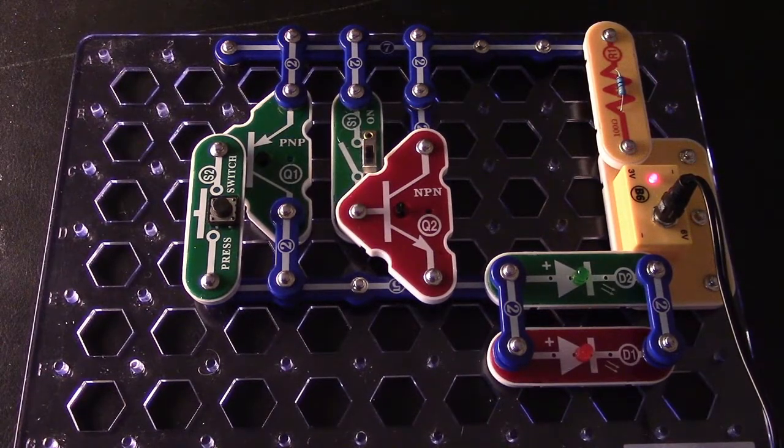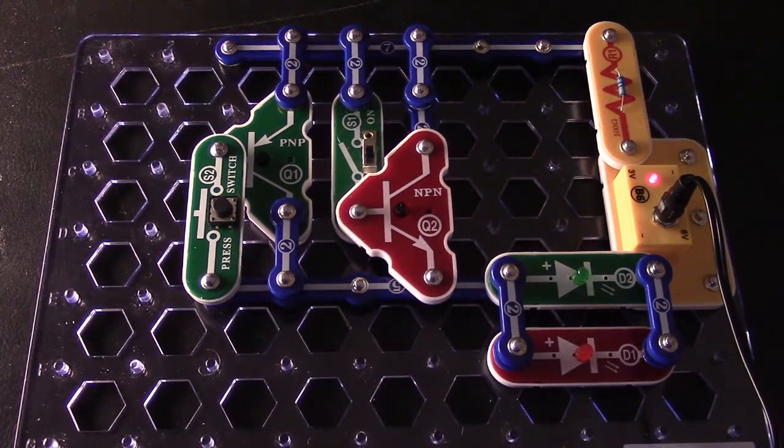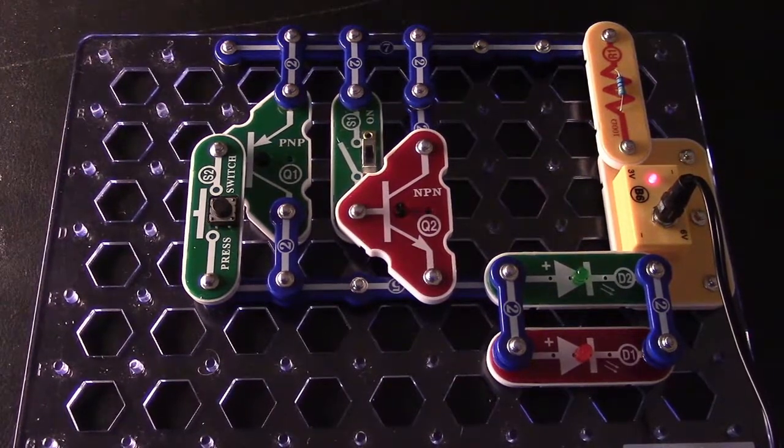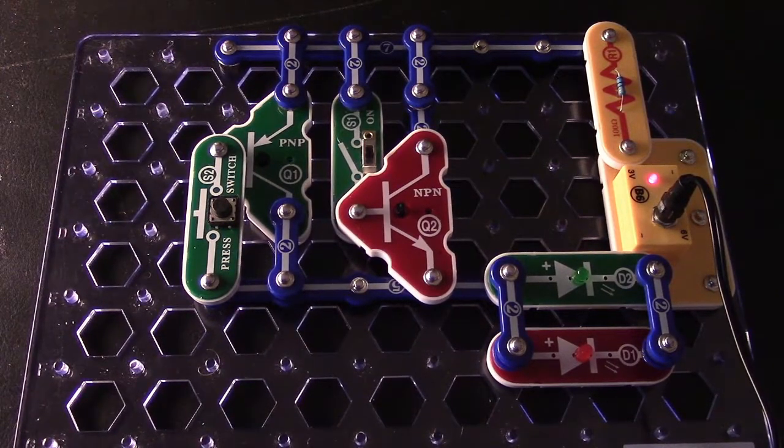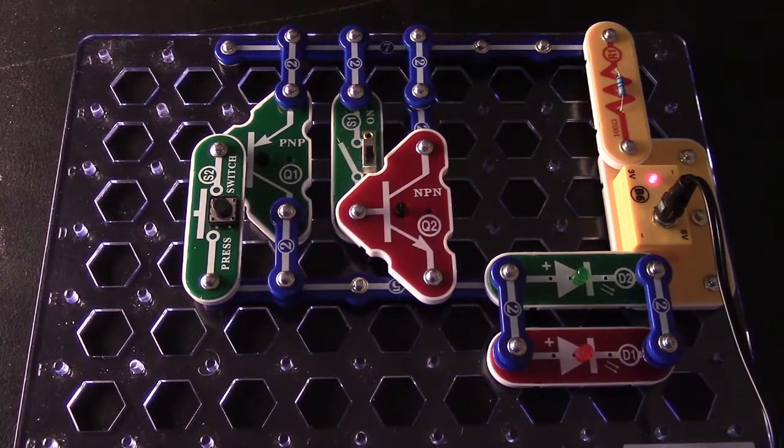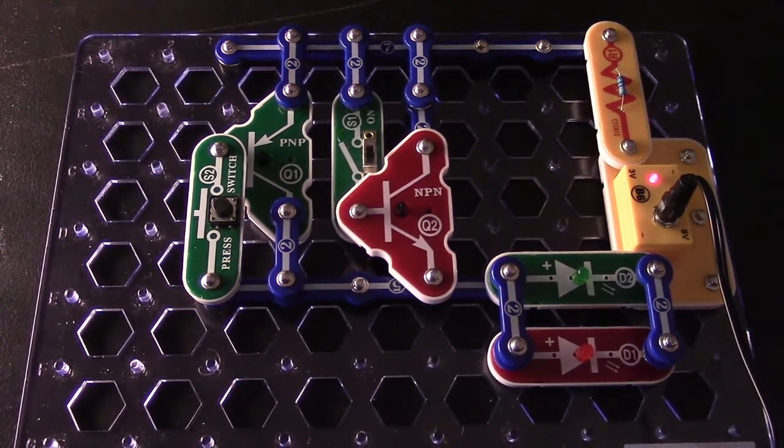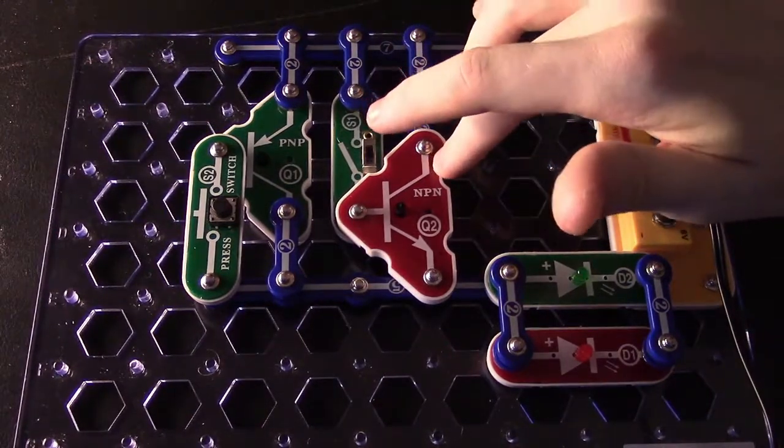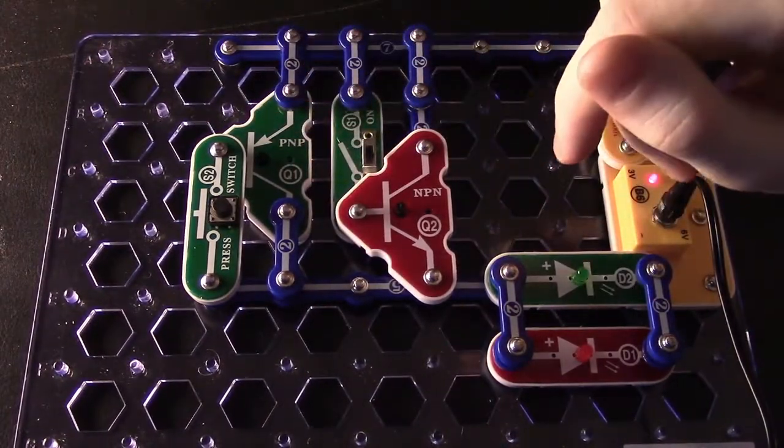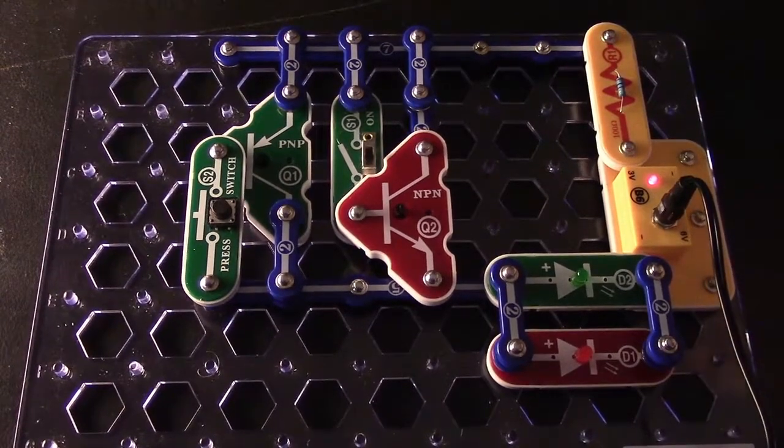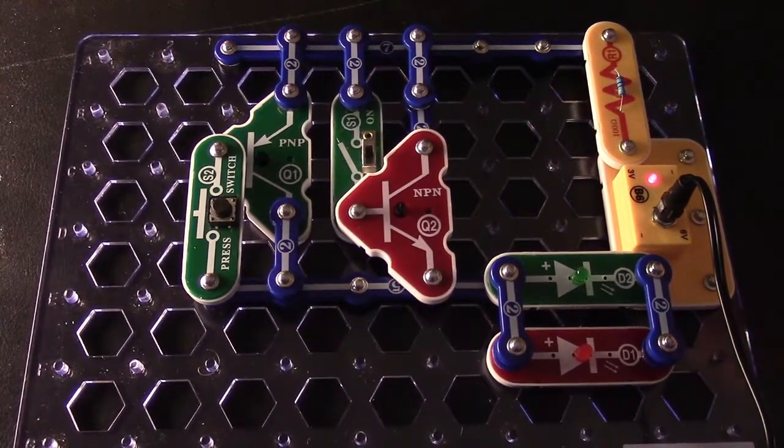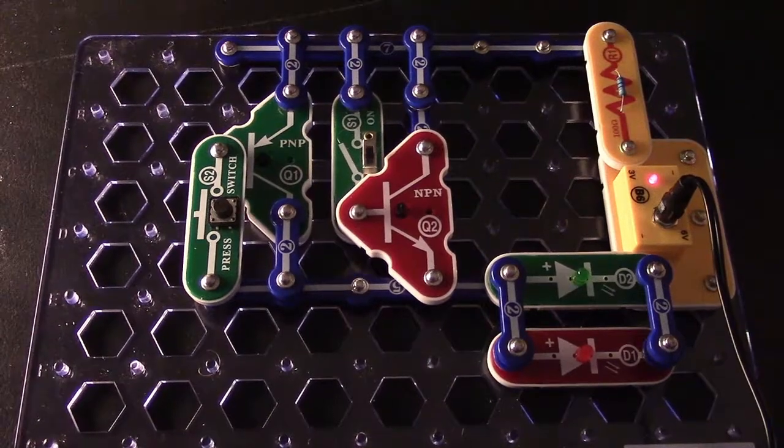Today we're going to look at using transistors in circuits. In particular, we're going to look at the bipolar junction transistor or BJT style. Basically, there's two different kinds: the NPN transistor and the PNP transistor. The easiest and simplest way to look at a transistor is basically acting like a switch.